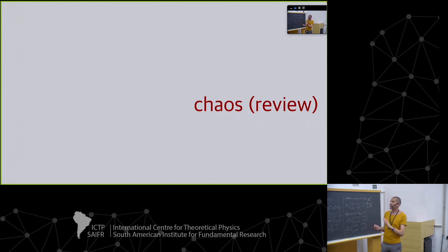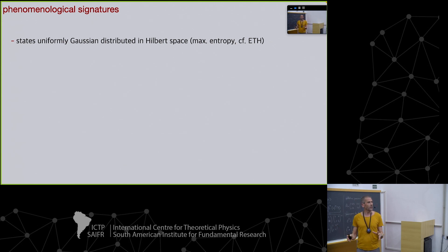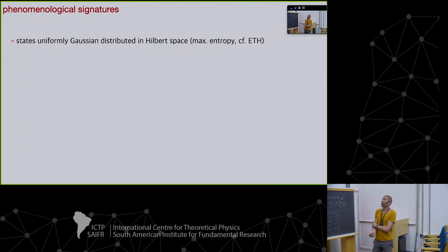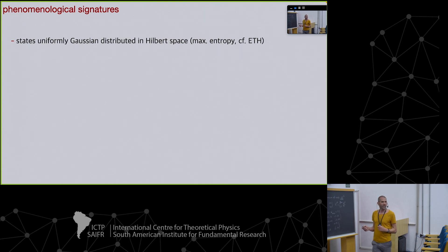Chaos — quick review, what do we need? I want to focus on the ergodic phase of quantum chaos. Ergodic is important. Think of a generic ergodic quantum system — forget gravity for the time being. There are just two fundamental phenomenological signatures we need to describe ergodic quantum chaos. The first is that quantum states are maximally random, as entropic as I get — they are uniformly Gaussian distributed over Hilbert space. This goes along with concepts such as ETH and maximum entropy of states.